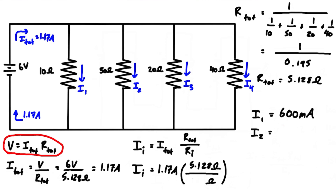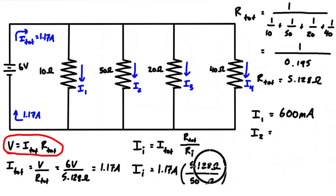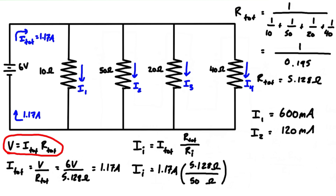1.17 amps times 5.128 ohms divided by 50 ohms gives us 0.12 amps, which is the same as 120 milliamps.